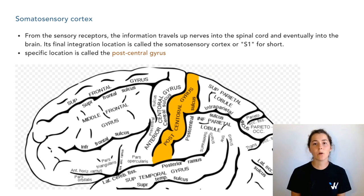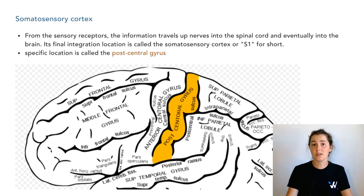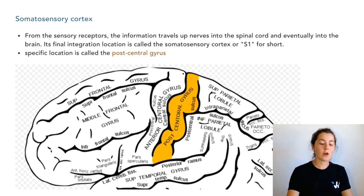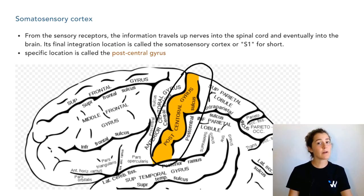The somatosensory cortex is where all the information is processed that comes from the mechanoreceptors and the different things that help us with our touch sensation. The sensory information that we receive goes and congregates in a place called the post-central gyrus, which is the main part of the brain that deals with somatosensory information.